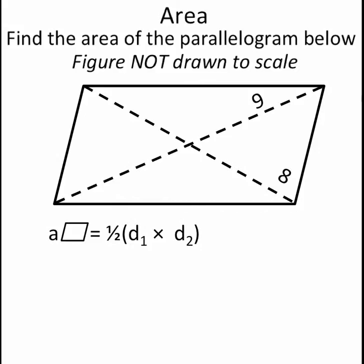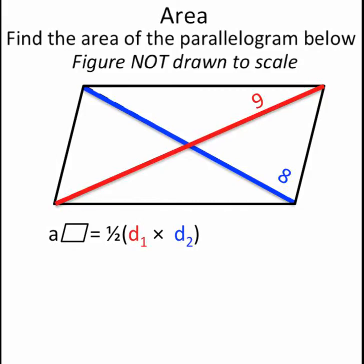This problem gives us values for both diagonal 1 and diagonal 2. So we can use substitution to substitute those values into our equation, and we get the area of this parallelogram is one-half of 9 times 8.